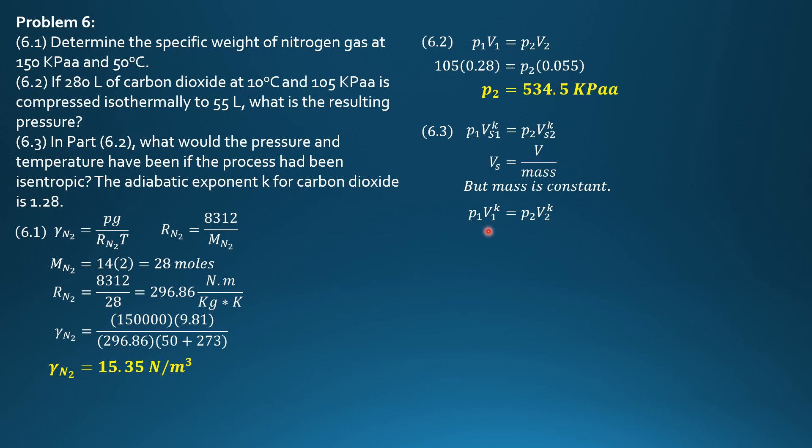So substituting values, P1V1 is 105 times 0.28 raised to 1.28 equals P2 times 0.055 raised to 1.28. So solving for the resulting pressure, it is 843.1 kilopascals absolute.